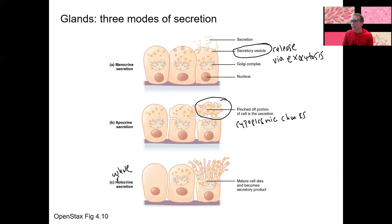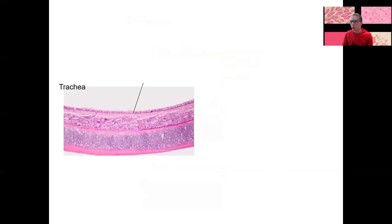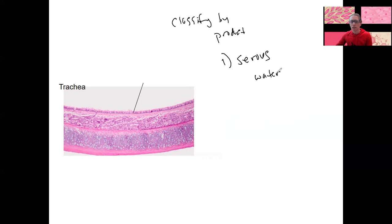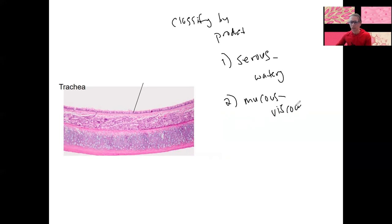The other way to classify glands is by what they produce — the product. The two main general types are serous, which is watery substance similar to blood plasma and sometimes contains enzymes, and mucus, which is more viscous — goblet cells are an example of that. There are also glands that are a combination, called seromucosal.